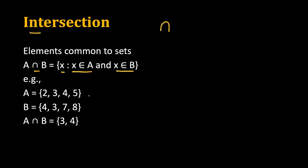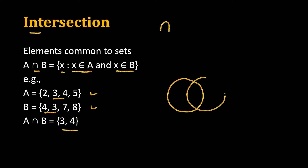For example, if A is {2, 3, 4, 5} and B is {4, 3, 7, 8}, we see that 3 and 4 are common to both. So the intersection of A and B is {3, 4} because there is no other element common to both. In a Venn diagram, 3 and 4 appear in the overlapping region, while 2 and 5 are only in A, and 7 and 8 are only in B. The intersection denotes this common part.